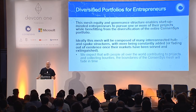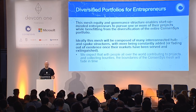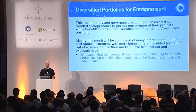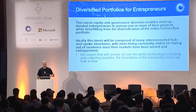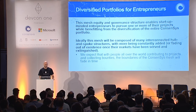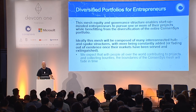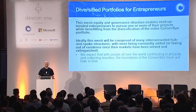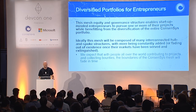This mesh and governance structure enables startup-minded entrepreneurs to pursue one or more of their projects while benefiting from the diversification of the entire ConsenSys portfolio. Ideally, this mesh will be composed of many interconnected hub and spoke structures, with more being constantly added or fading out of existence as they're no longer necessary. We expect that with people all over the world contributing to projects and collecting bounties, the boundaries of the ConsenSys mesh will fade.